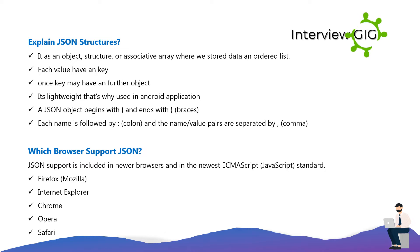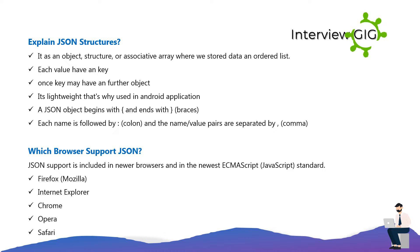JSON structures: it has an object structure, or associative array, where we store data as an ordered list. Each value has a key, and one key may have a further nested object. It is lightweight, which is why it is used in Android applications. A JSON object begins and ends with curly braces. Each name is followed by a colon, and the name-value pairs are separated by commas.